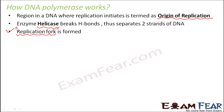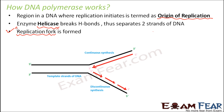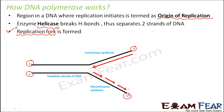Once this replication fork structure is formed, only then does the action of DNA polymerase start. The two strands of the parental DNA are anti-parallel to each other — one strand runs 5' to 3' and the other runs 3' to 5'. When the enzyme helicase comes in, it divides the DNA into this replication fork structure. So this was your parental DNA with two strands — red and blue — one from 5' to 3', the other from 3' to 5'.